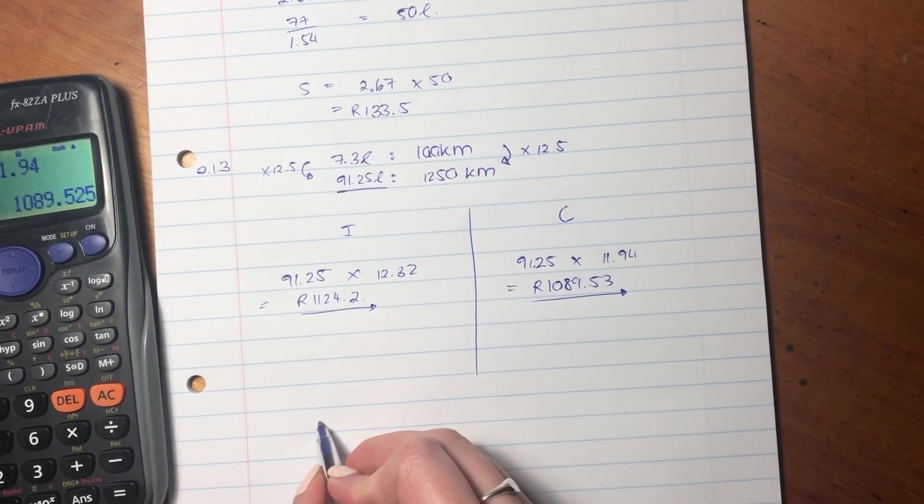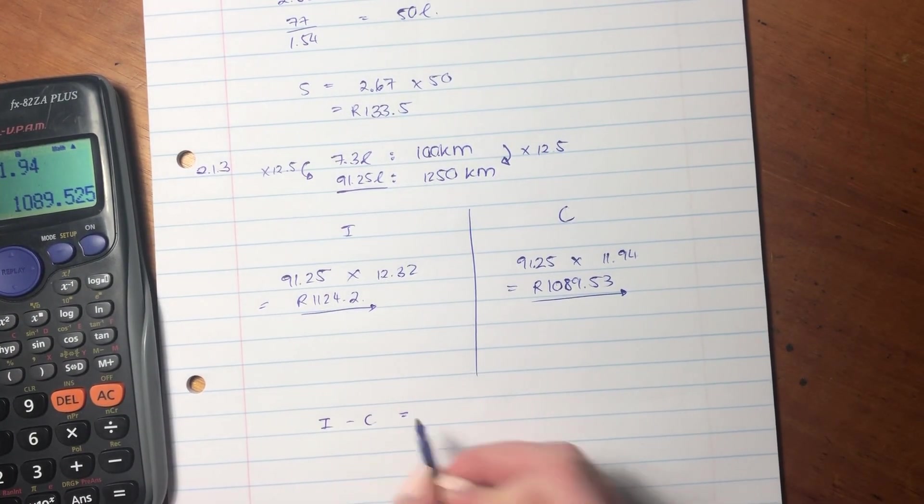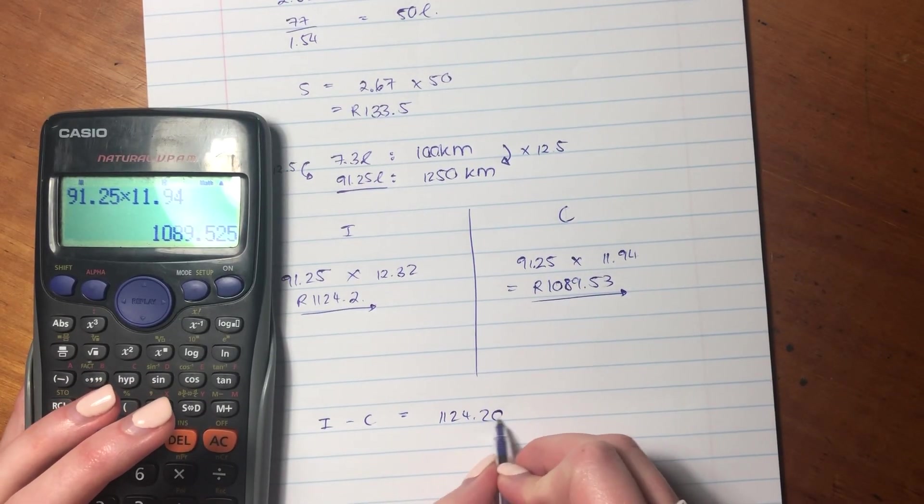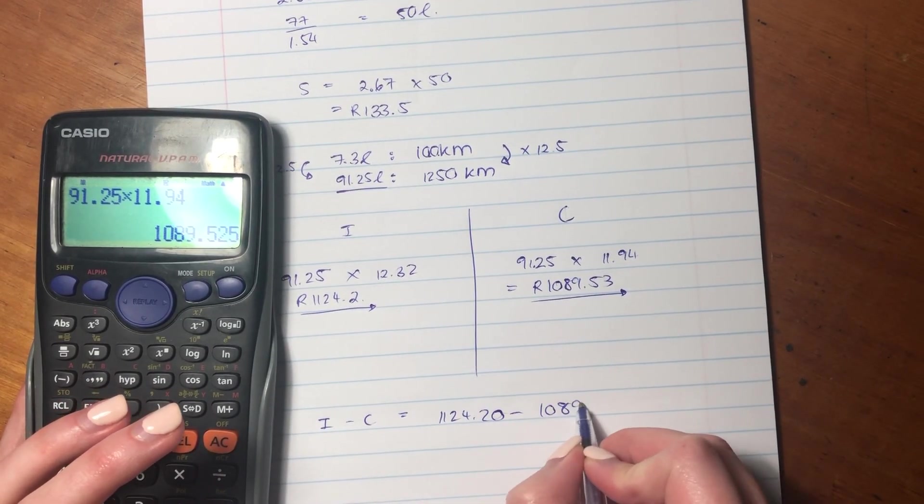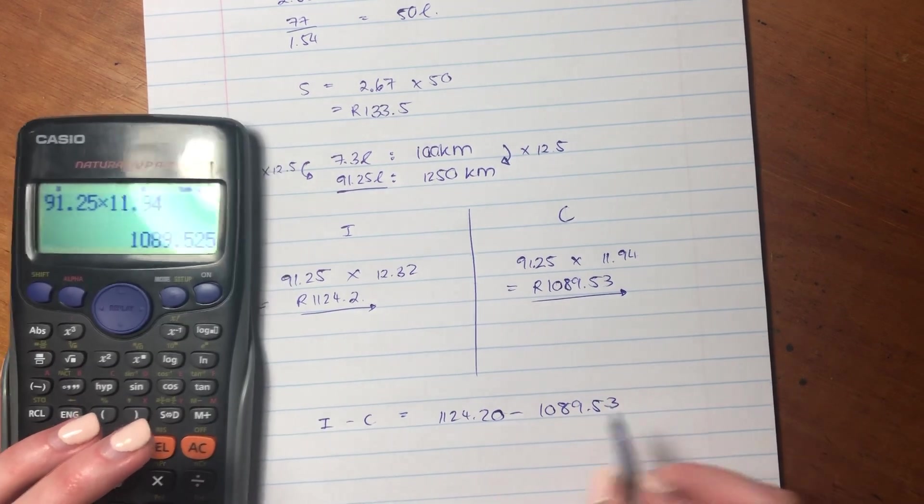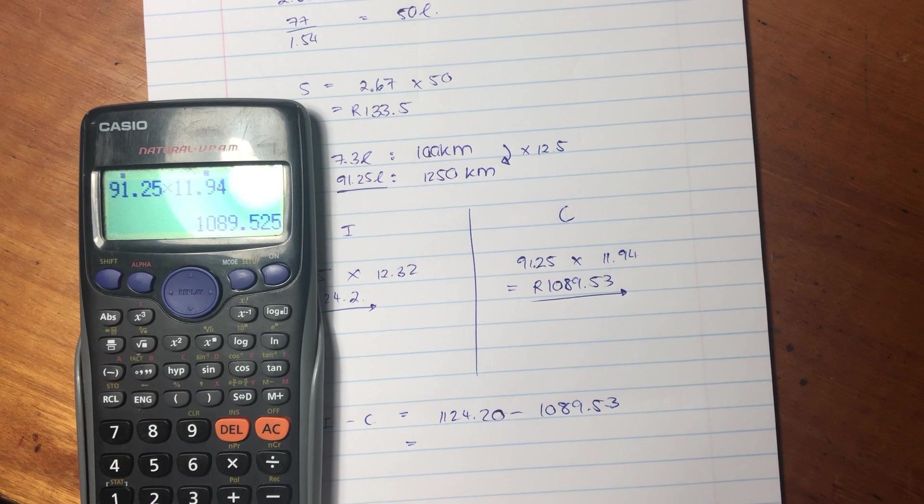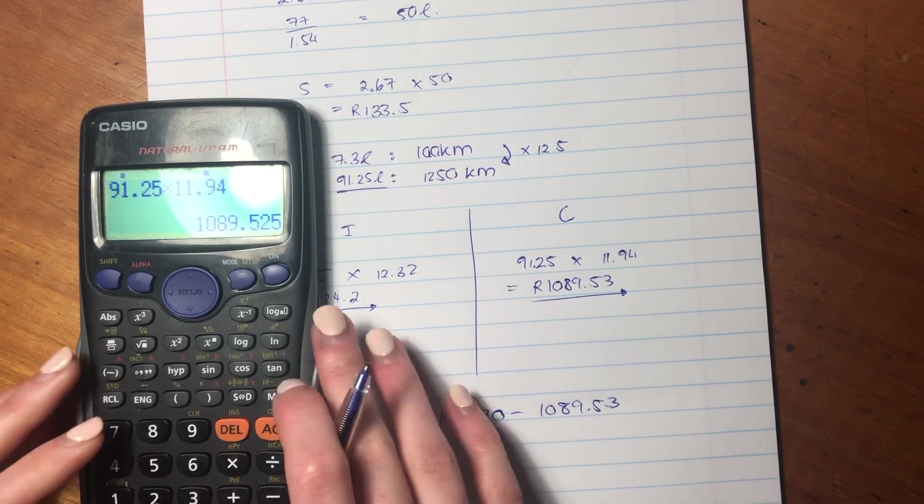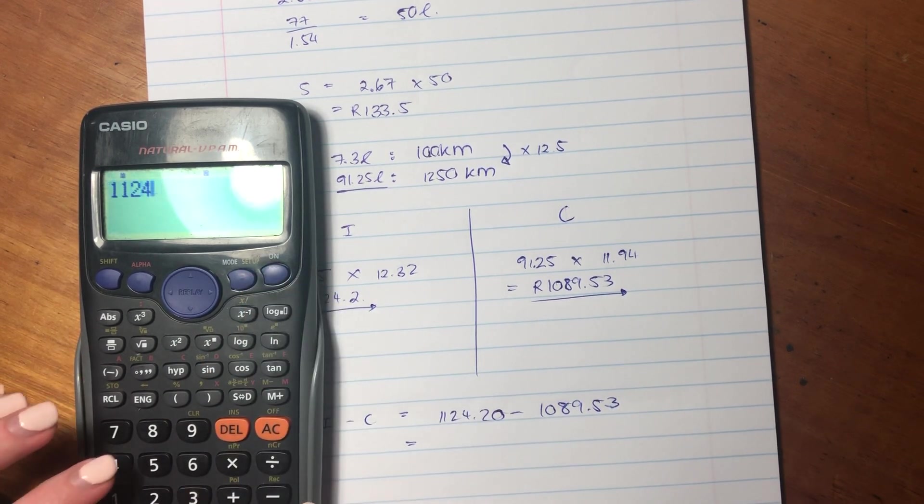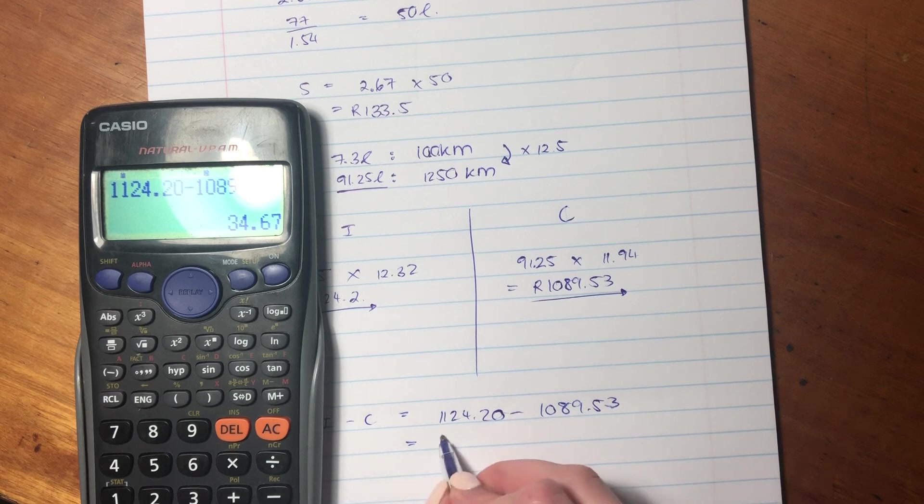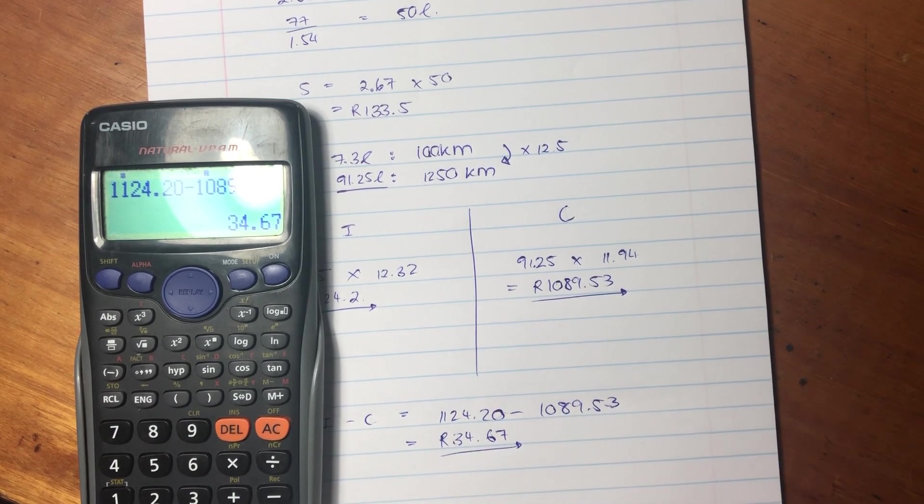So now the difference, we say inland minus coastal. So we're going to say 1124.20 minus 1089.53. Let's just check that we did that correctly. Let's put that into our calculator. And I am getting, the difference is 34.67 cents.